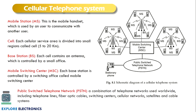Let us understand the cellular telephone system. Generally a cellular telephone system has a mobile station — the mobile handset — which communicates through a base station, commonly called a tower. The hexagonal structure shown here is called a cell, consisting of a single base station that handles multiple mobile stations. A cell covers 5 to 20 kilometers, with a single base station having an antenna controlled by a small office.